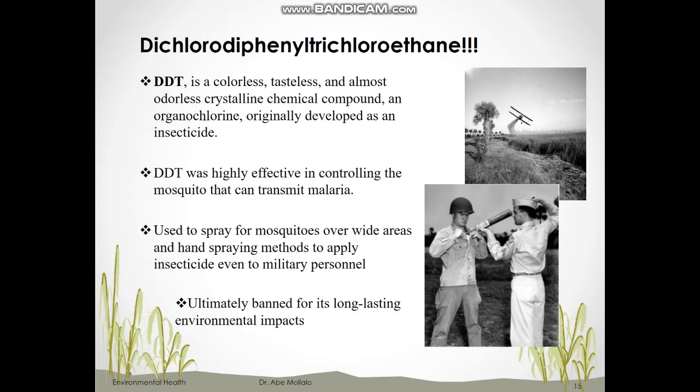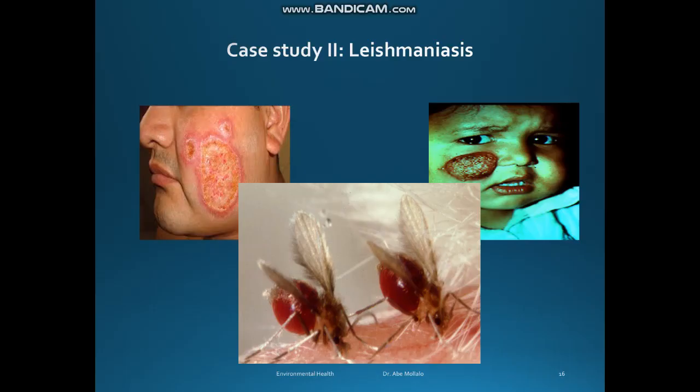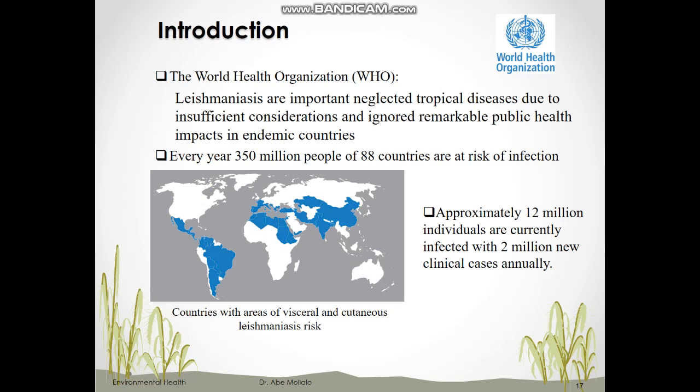The second vector-borne disease is leishmaniasis, an arthropod-borne disease. The World Health Organization classifies leishmaniasis as a neglected tropical disease because little attention is paid to it despite its remarkable public health impacts. Almost 350 million people from 88 countries are at risk of leishmania infection. Currently 12 million prevalent cases are infected, and 2 million new incident cases are diagnosed every year. This map shows the geographic distribution of leishmaniasis — restricted almost entirely to tropical and subtropical countries.